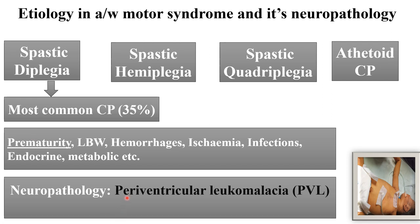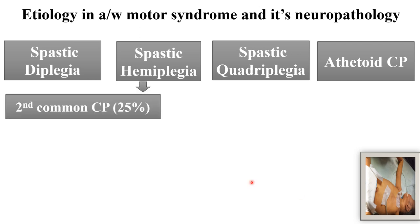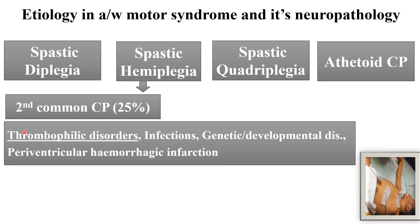In the neuropathology of spastic diplegia, periventricular leukomalacia is the characteristic finding, because the white matter adjacent to the ventricle is more susceptible to hypoxic brain damage in premature babies. Spastic hemiplegia is the second most common type of CP, present in around 25% of cases. Thrombophilic disorder is the main etiology, leading to infarction in the brain.